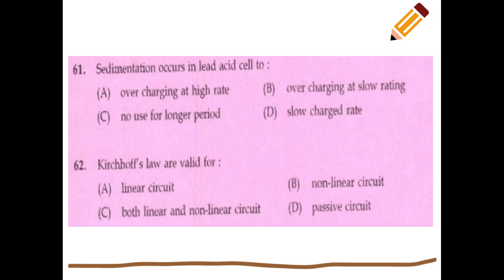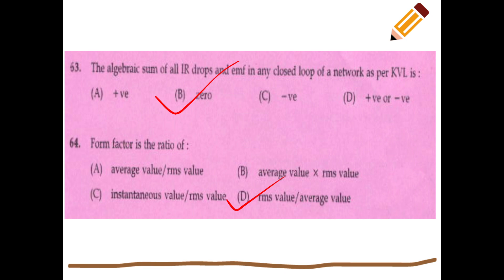As per KVL, the algebraic sum of all IR drops and EMFs in any closed loop of a network is equal to zero. The form factor is equal to RMS value divided by average value.